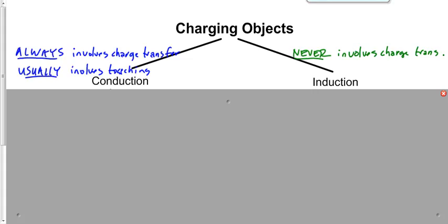Induction never involves touching. So: if charge is transferred, it's conduction; if two objects touch each other, it's conduction; if charges don't transfer, it's induction; if two objects don't touch each other, it could be induction or conduction depending on whether charges were actually transferred.